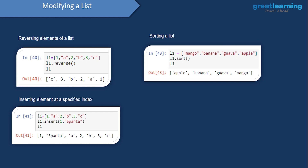We can also sort a list. With a list of fruit names, if we want to sort them in alphabetical order, we use the sort method. The sort method sorts all elements alphabetically — so we get apple, followed by banana, followed by guava, and then mango. Now let's use the reverse, insert, and sort methods in Jupyter Notebook.